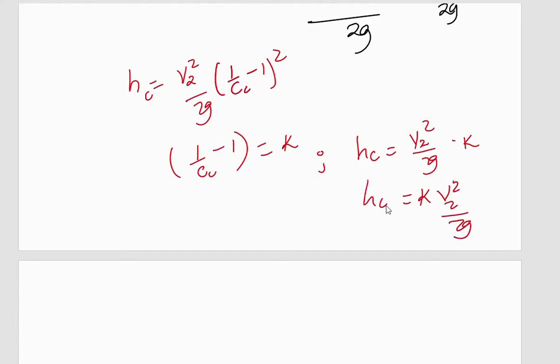So it means, in other words, if we have, for example, if Cc is equal to 0.62, K is equal to 0.375. Therefore, hc will be 0.375 V2 squared over 2g.